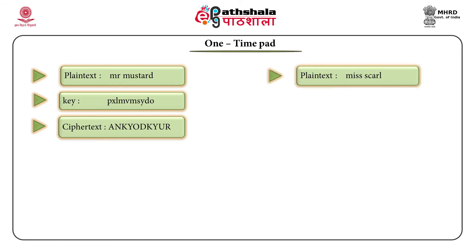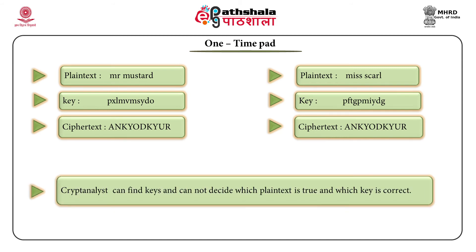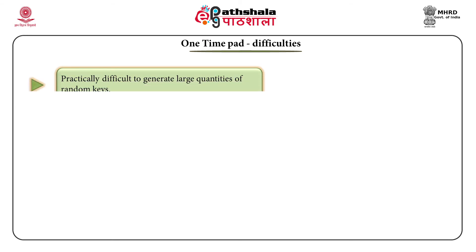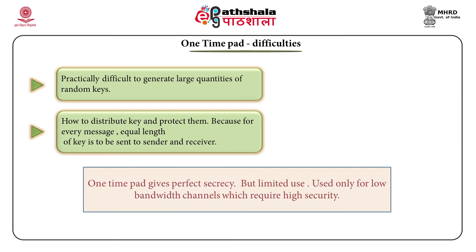The key is of the same length as the plain text. We sum the key and plain text characters using their numeric values. One-time pad is considered unbreakable because there is no statistical relationship between the plain text and the ciphertext. It includes spaces, making the total number of characters 27. Even though a cryptanalyst may find keys, they cannot decide which plain text is true or which key is correct. This cipher is secure, but one-time pad gives perfect secrecy with limited use.